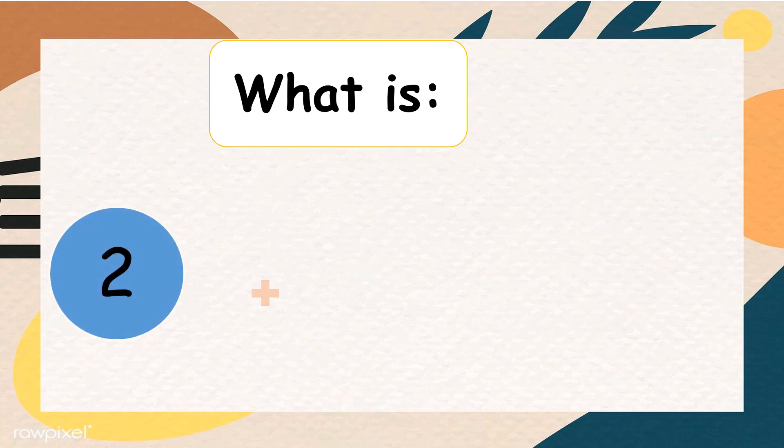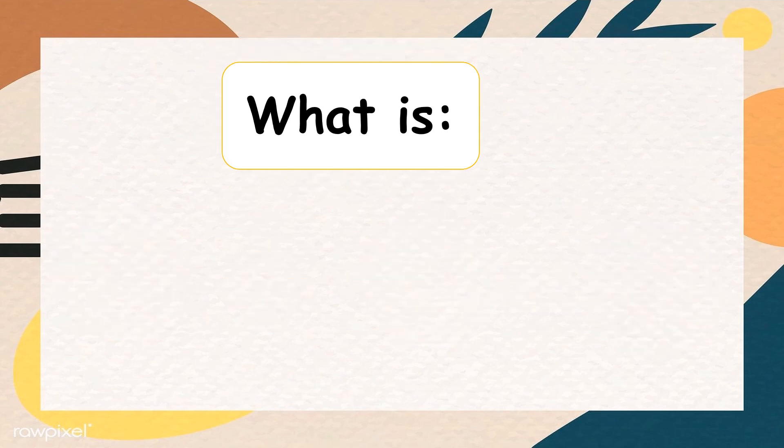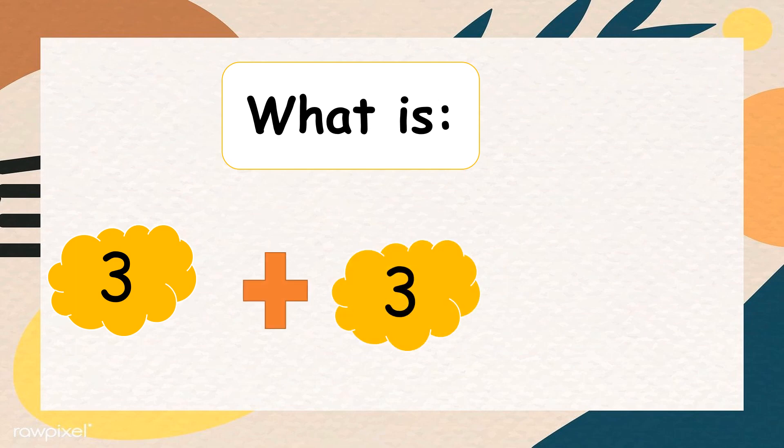Let's do another one. What is 2 plus 2? You are right. 2 plus 2 is equal to 4. Oh, what is 3 plus 3? Now, let's add. Very good. It's equal to 6.